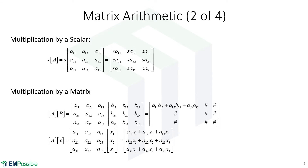Multiplication by a matrix is more difficult. It's not too hard conceptually, but there's a lot of math here. Matrix multiplication is not element-wise multiplication, so don't confuse that with addition and subtraction. For example, the (1,1) element in the multiplied matrix is not just A(1,1) times B(1,1) — we're doing row-column operations. The (1,1) element is the top row in A multiplying the first column in B: A(1,1)·B(1,1) + A(1,2)·B(2,1) + A(1,3)·B(3,1).